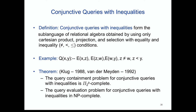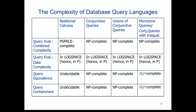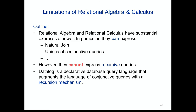The full picture: monotone queries and conjunctive queries with inequalities have essentially the same behavior with respect to these problems. There is a jump in complexity for equivalence and containment when going from unions of conjunctive queries either to monotone queries (more compact syntax, same expressive power) or to conjunctive queries with inequalities (strictly higher expressive power).